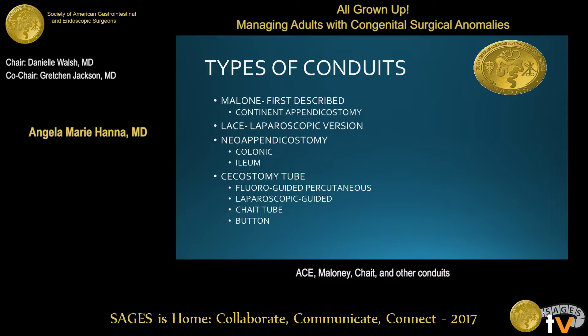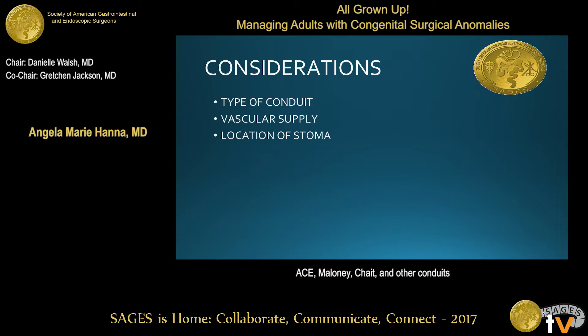The final option is cecostomy tubes, which can be placed fluoroscopically guided, laparoscopically guided, or open. Examples include a Chait tube and a button type, which is quite common. The button sits flat against the abdominal wall instead of having a tube left protruding, so you can disconnect the tubing and close it off. Considerations for these patients include what type of conduit they have, where the vascular supply is, and where the stoma is located.